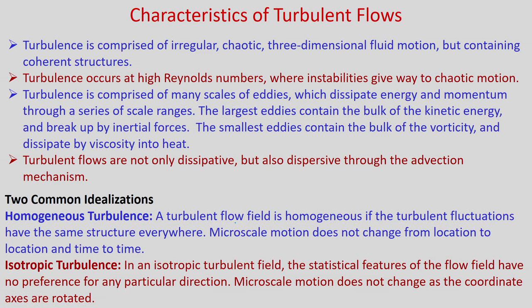To study turbulent flows we make two common idealizations: homogeneous turbulence and isotropic turbulence. Homogeneous turbulence means the turbulent flow field has the same structure everywhere — the micro-scale motion does not change from location to location or time to time. Isotropic turbulence means the statistical features of the flow field have no preference for any particular direction — the micro-scale motion does not change as the coordinate axes are rotated.